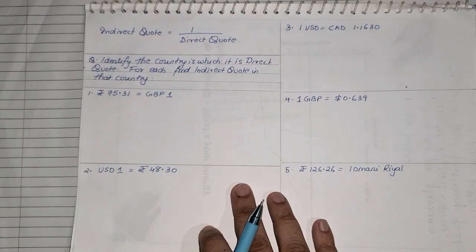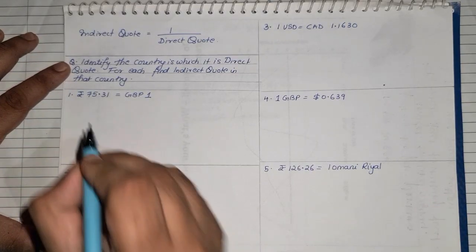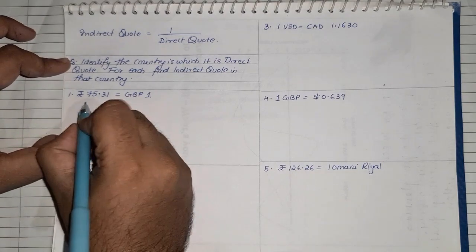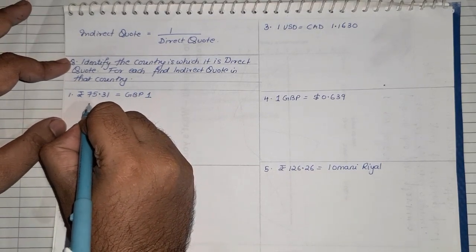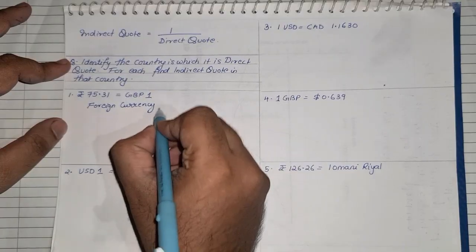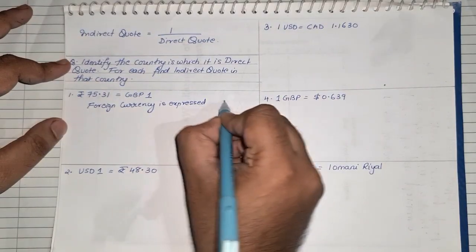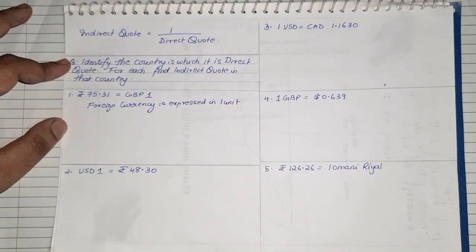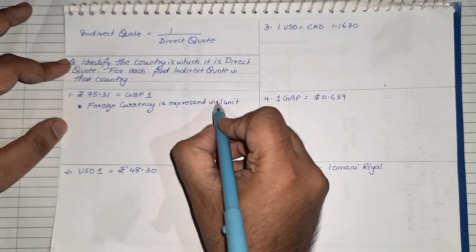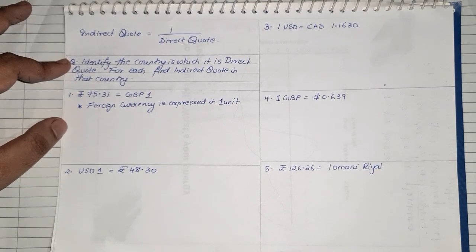In order to identify the direct quote, it is very simple. Look at this very carefully. This is the golden rule: foreign currency is expressed in one unit. Whichever quote is given to you, the currency in which one unit is being given is basically the foreign currency, and the currency exactly opposite to that will be our domestic currency.